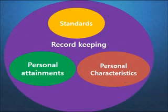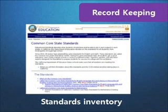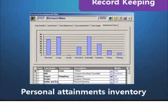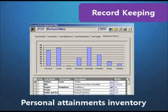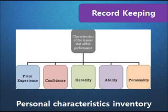First, technology is a very efficient tool for record keeping because it has a standards inventory, personal attainments, and personal characteristics inventory. The standards inventory includes required and optional educational standards. The personal attainments inventory contains records of students' progress. The personal characteristics inventory keeps record of students' characteristics that influence learning.